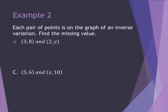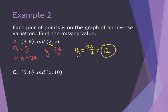For part b, I use the complete point (3, 8), so I have 8 equals k divided by 3. Multiplying both sides by 3 gives me k equals 24, or y equals 24 divided by x. Using the second point, I have y equals 24 divided by 2, which equals 12.